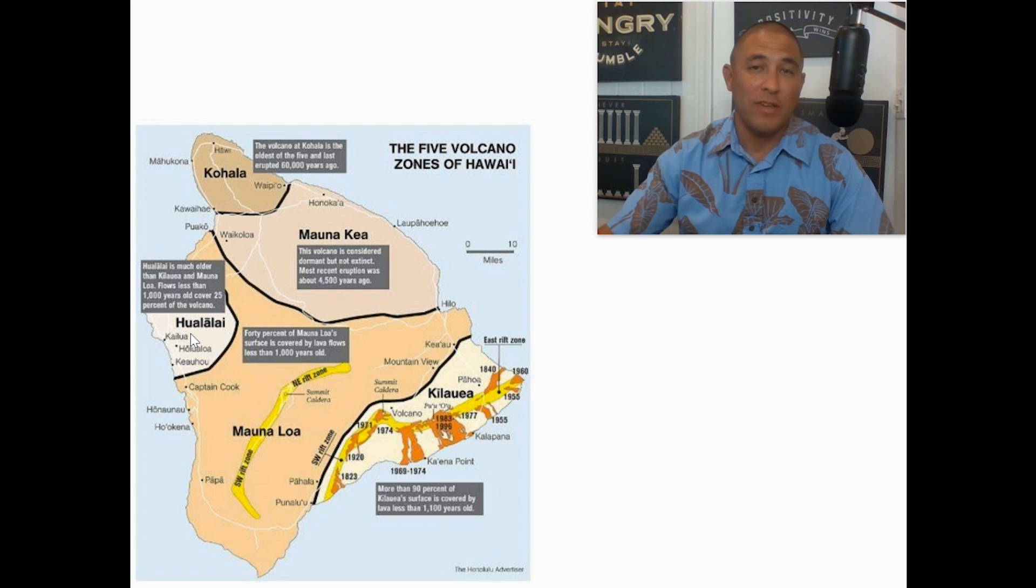25 percent of Hualalai has been covered within the last 1,000 years by a lava flow. Then you have Mauna Loa, which is the second most active volcano on the island. That one has 40 percent of its surface covered within the last 1,000 years by a lava flow. And then we have Kilauea right here, which is the most active volcano, which as we all know in 2018 took Leilani Estates and a bunch of other homes in that area.